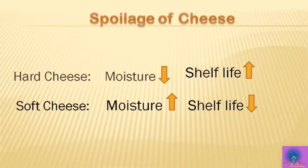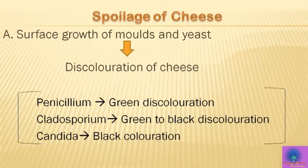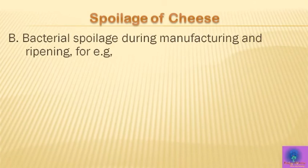Moving to the spoilage of cheese: harder cheeses with lower moisture contents have longer shelf lives. Faults that can arise include surface growth of molds which produce discoloration effects. Molds and yeast-like species of Penicillium may cause green discoloration, Cladosporium causes green to black discoloration, and Candida causes black discoloration. However, harder cheeses have a wax coating or rind that minimizes these problems, and film-wrapped and vacuum-packed cheese should prevent fungal growth by excluding air.